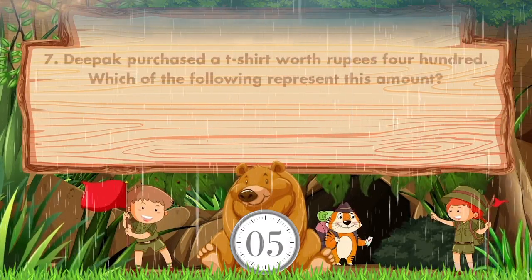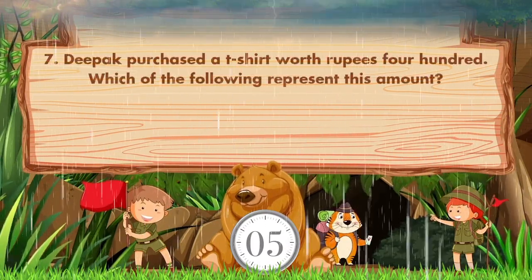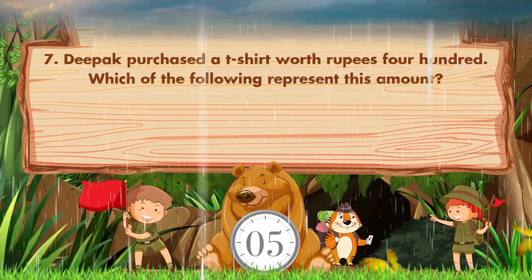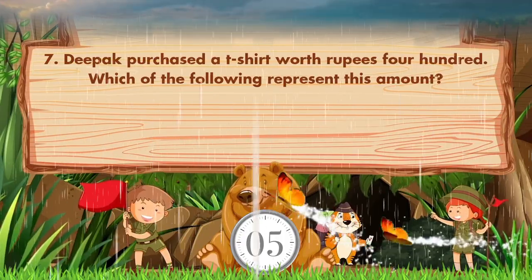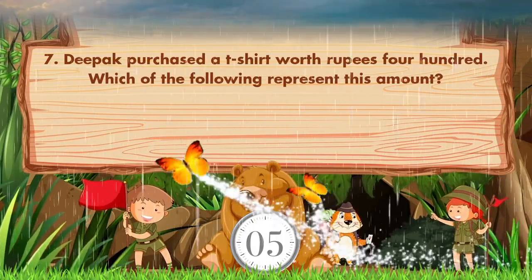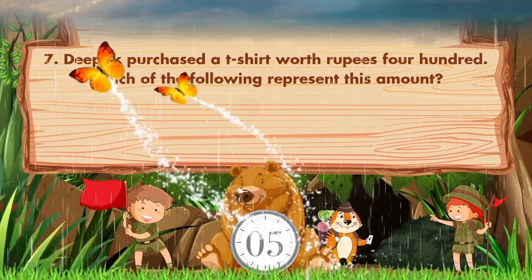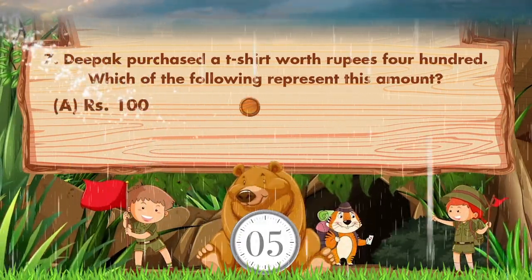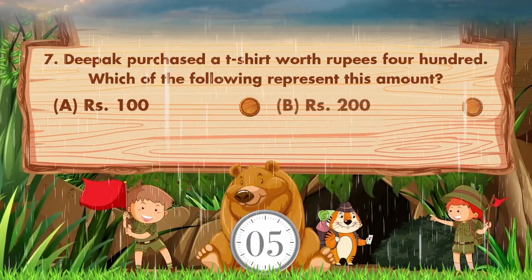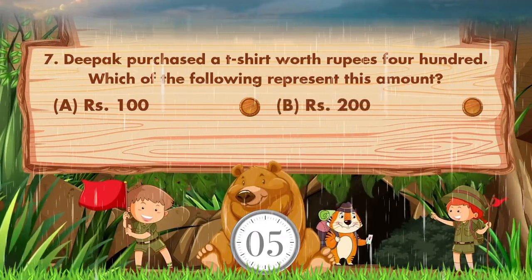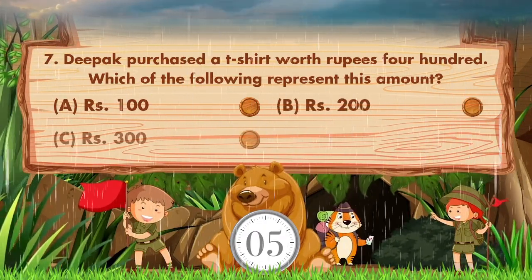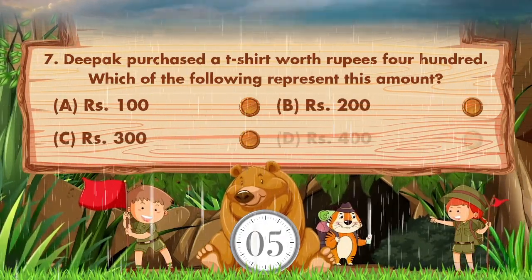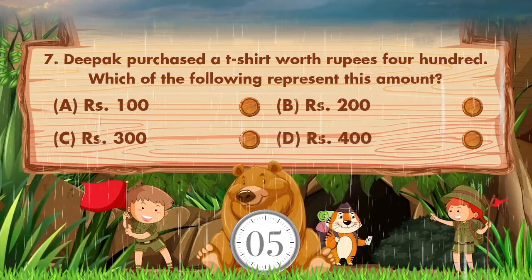Deepak purchased a t-shirt worth 400 rupees. Which of the following represents this amount? Option a is 100 rupees, option b is 200 rupees, option c is 300 rupees, option d is 400 rupees.